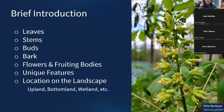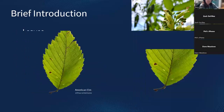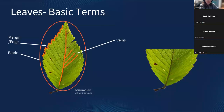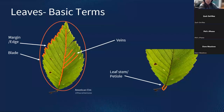Some of the tree parts and terms we're going to look at are the leaves, stems, buds, bark, flowers, and fruiting bodies, unique features, and location on the landscape. Starting with leaves: the flat green part of the leaf we call the blade. The edge of the leaf we call the margin, and those lines that go down the blade are the veins. These can all come in different shapes and arrangements. What you might consider the leaf's stem, we call the petiole, and those come in different lengths and sizes as well.